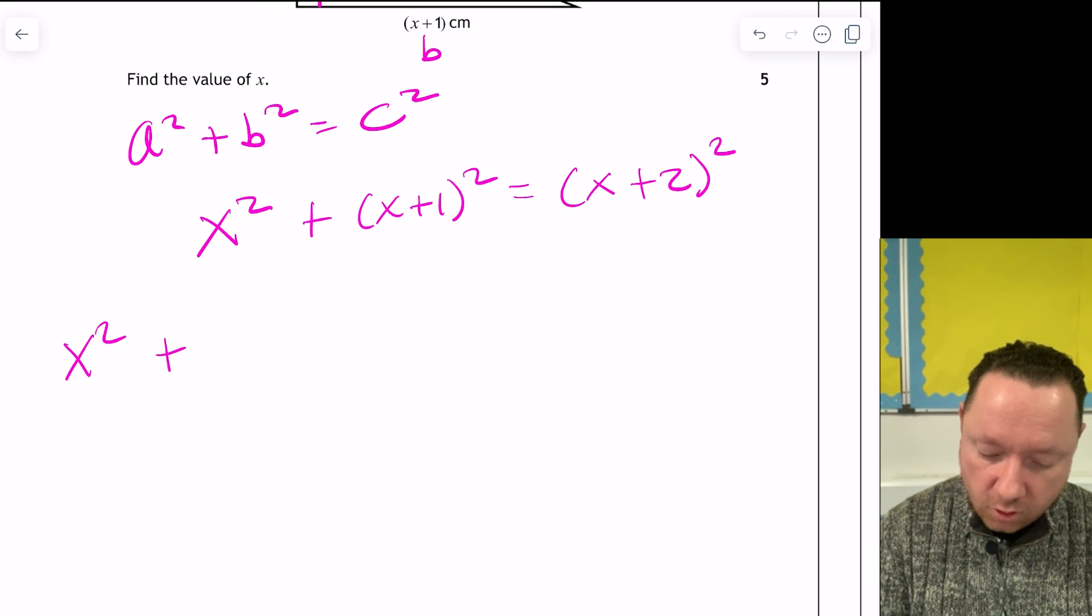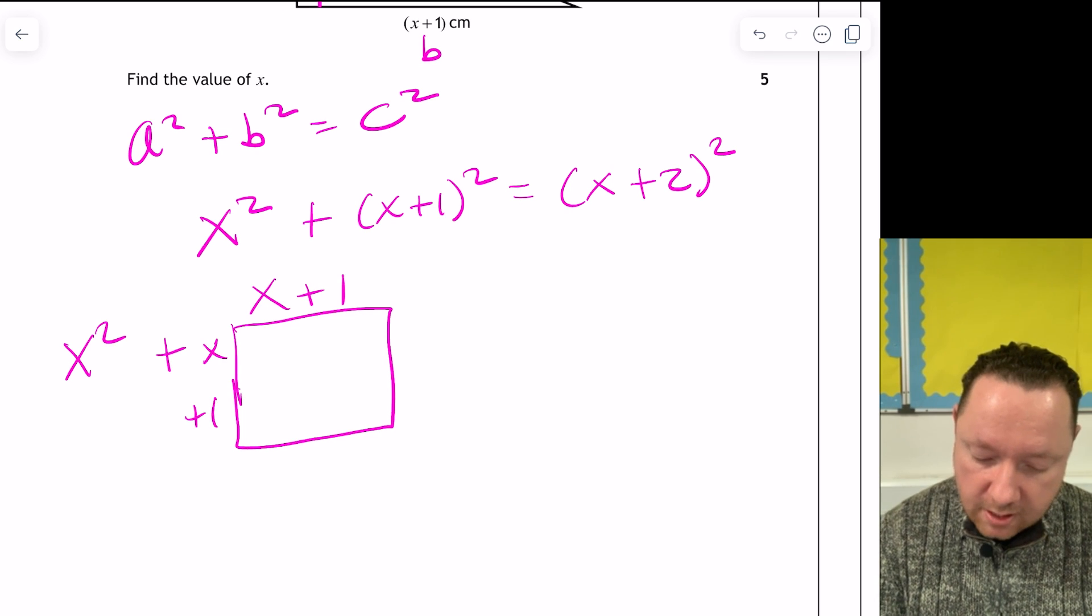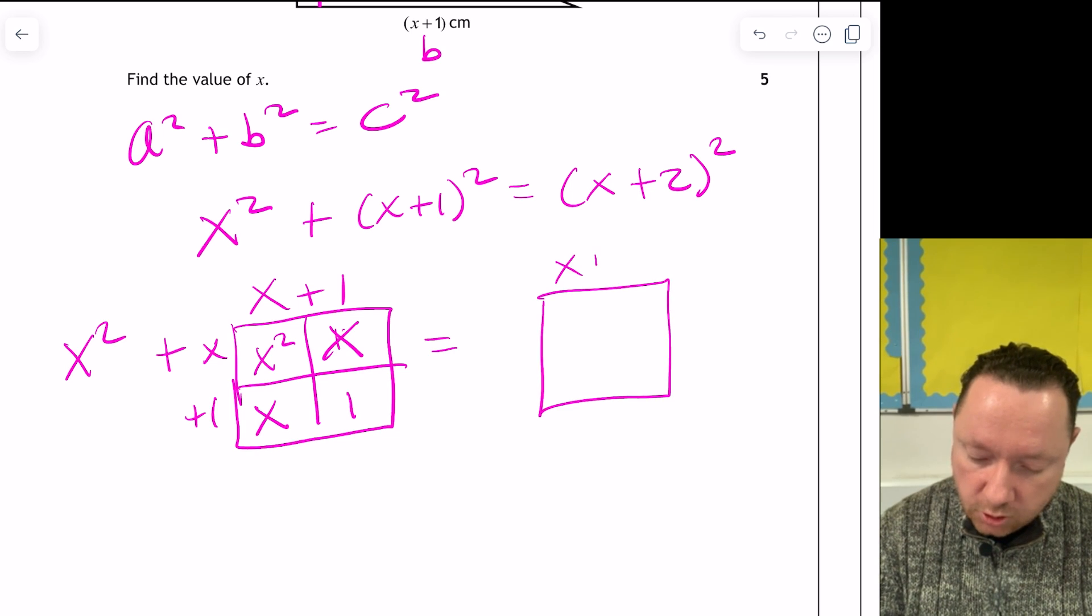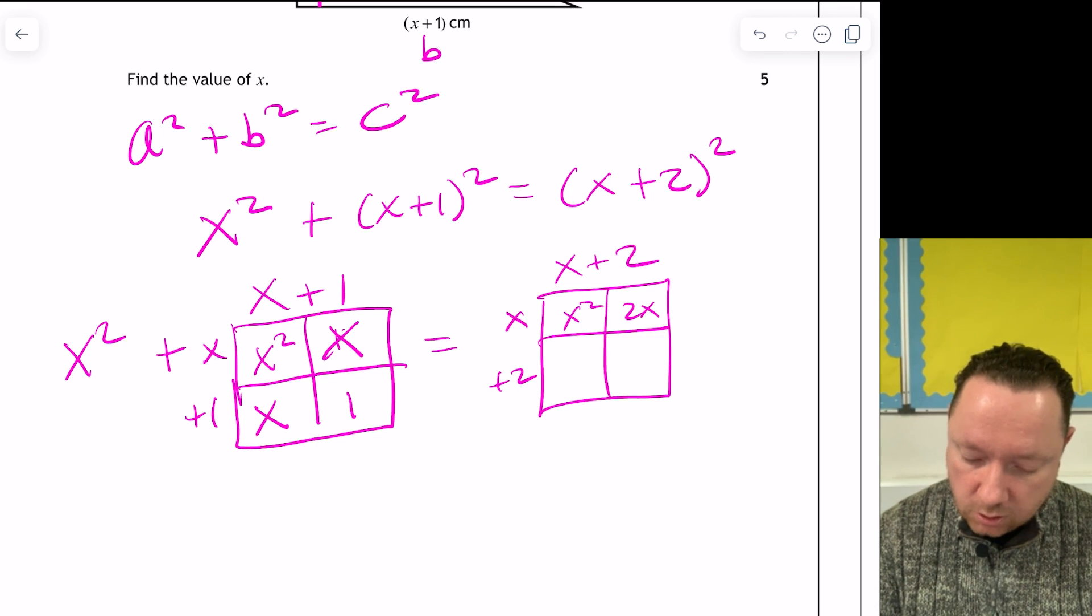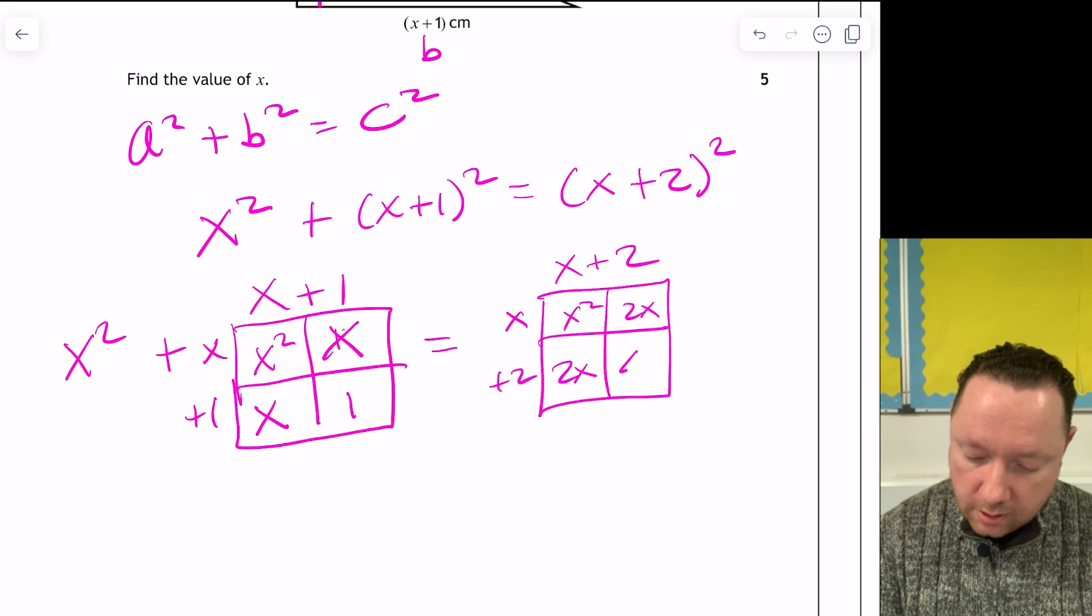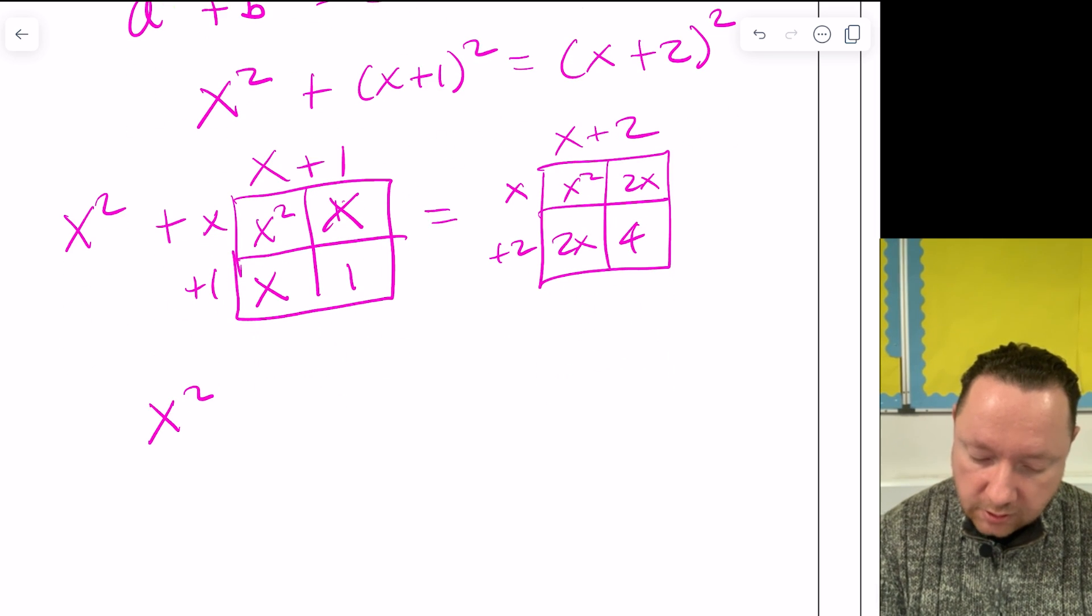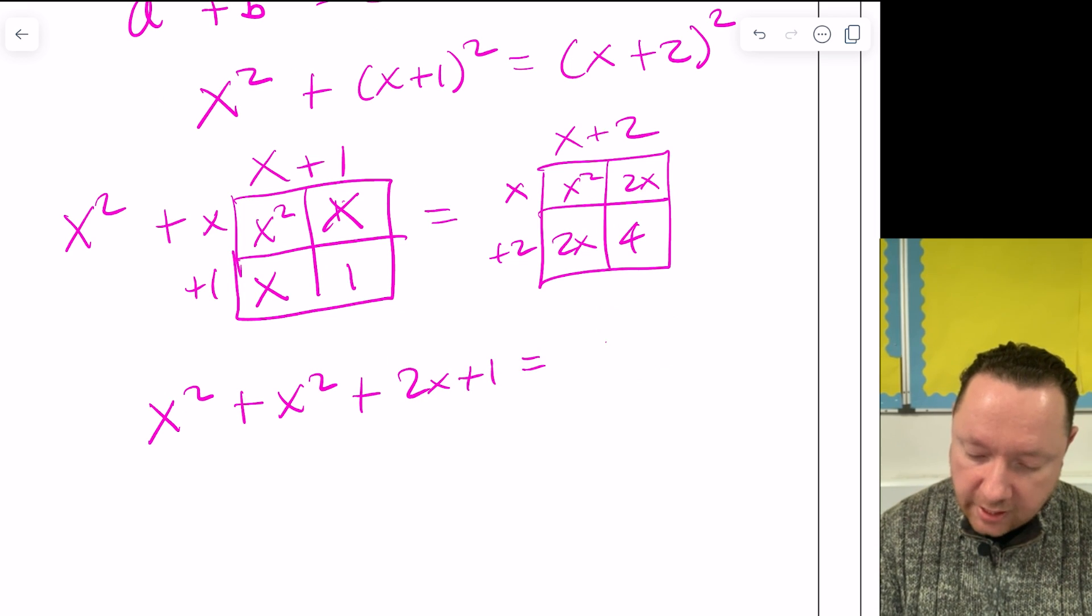Now that's quite tricky, it looks. But we'll just expand our brackets and hopefully we'll get it somewhere. So let's start off with x squared. We've got that. And then you've got double brackets. So you can use a box if you really need to. I'll do it just for the sake of this. You get x squared, x, x again, and then 1. And that equals x plus 2 times x plus 2. x squared, 2x, 2x, and 4. So taking everything out, we get x squared plus x squared and there's two x's and there's 1 on the left. And then there's x squared plus 2x, 2x is 4x, and then a 4.